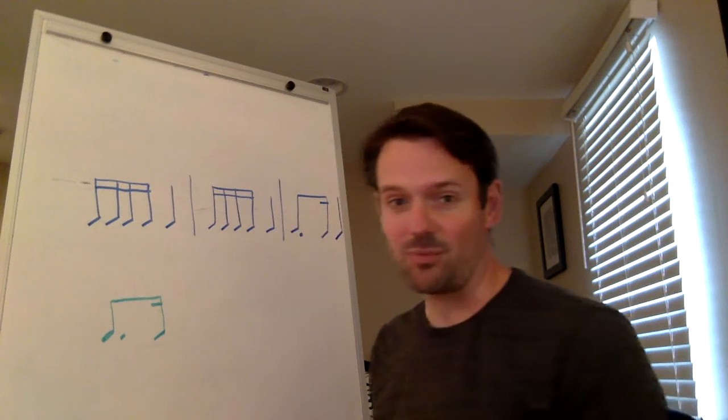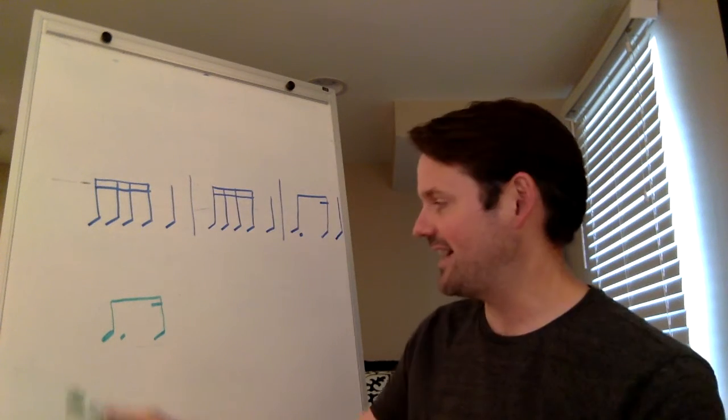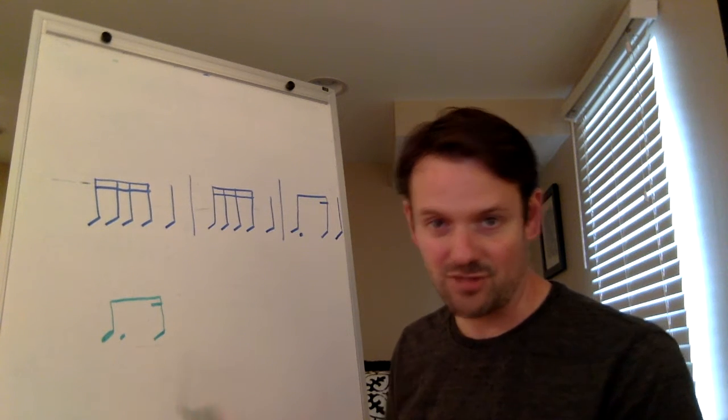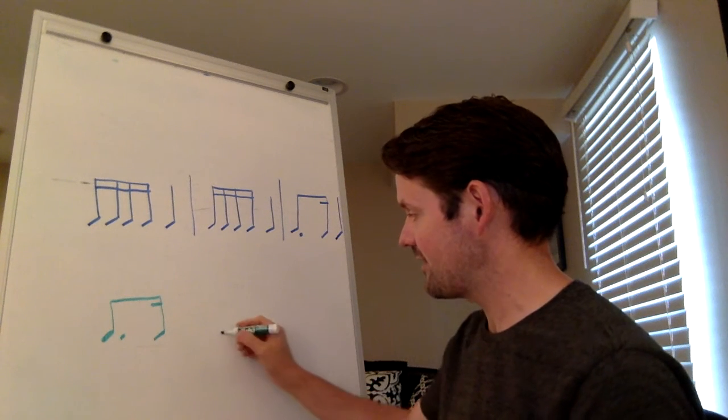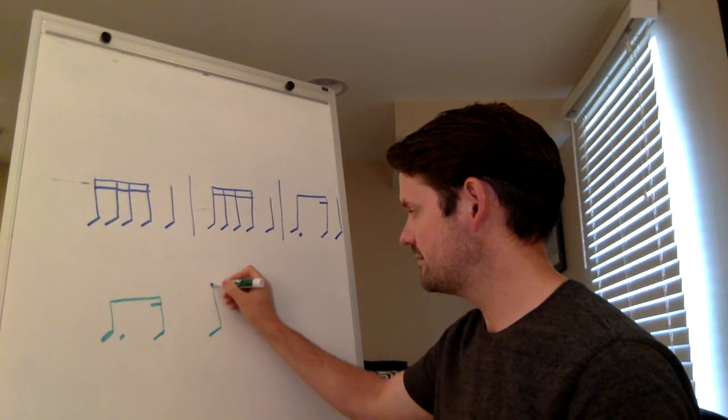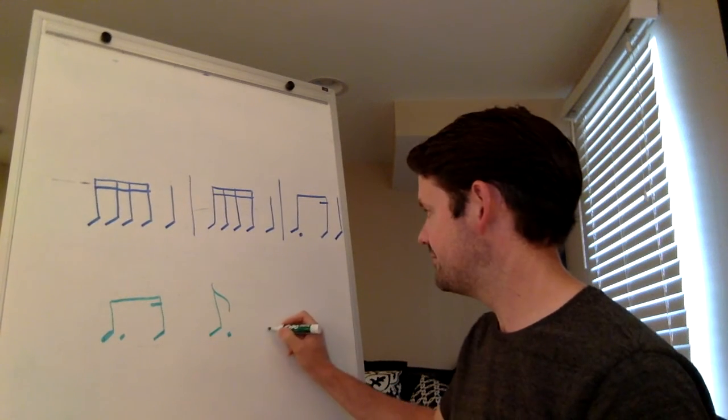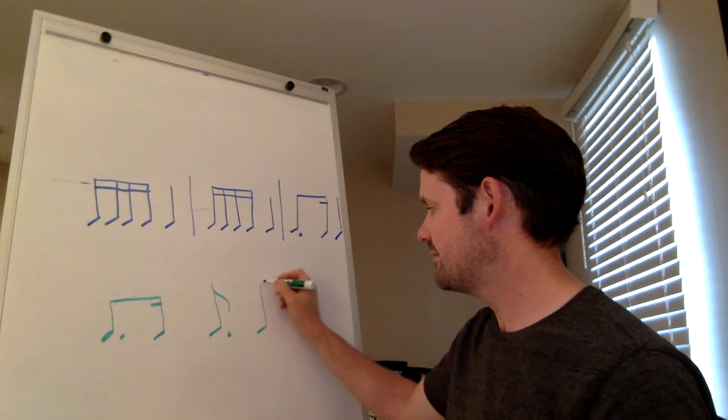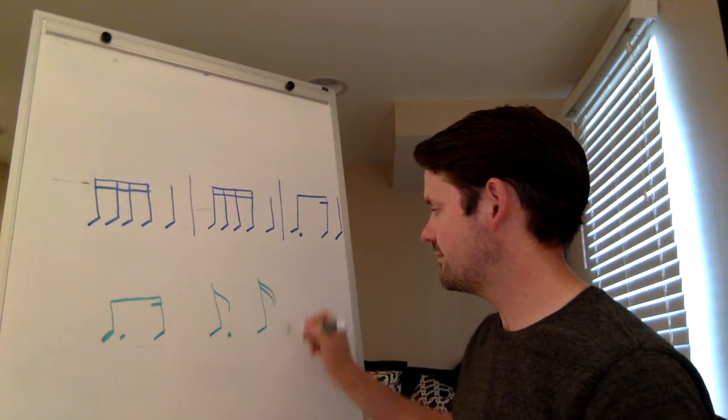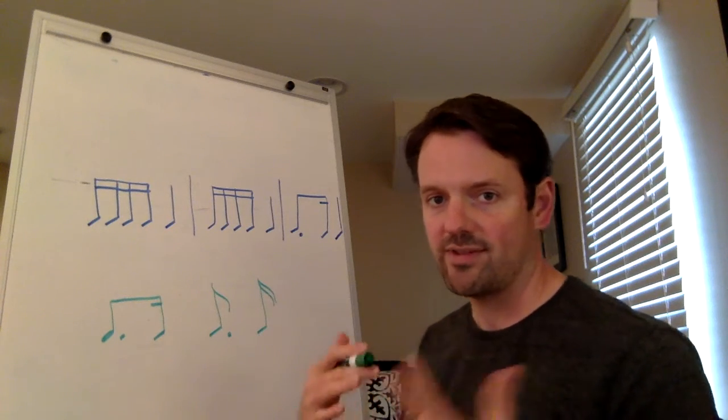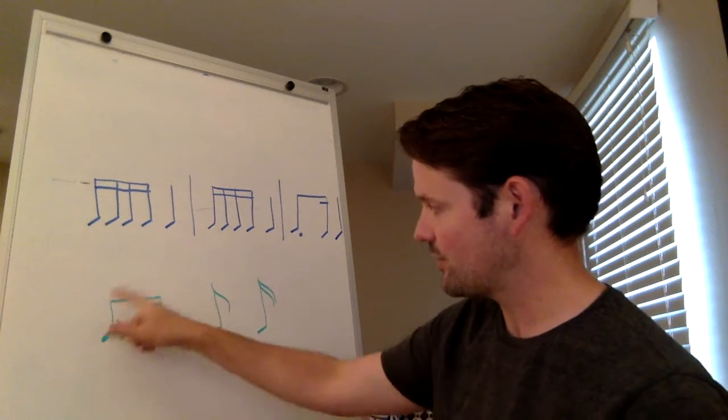So today we're going to work on what we call the dotted eighth, sixteenth rhythm. So just to make sure that you guys are seeing what these things are. Here we have an eighth note with a dot, and then we have one sixteenth note. When you write them together on one beat where the stems are touching, it's written like this.